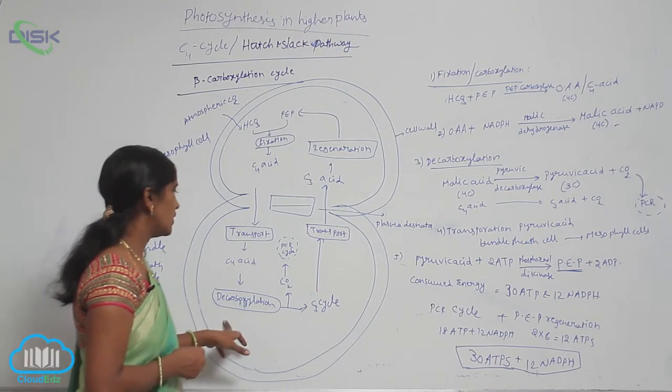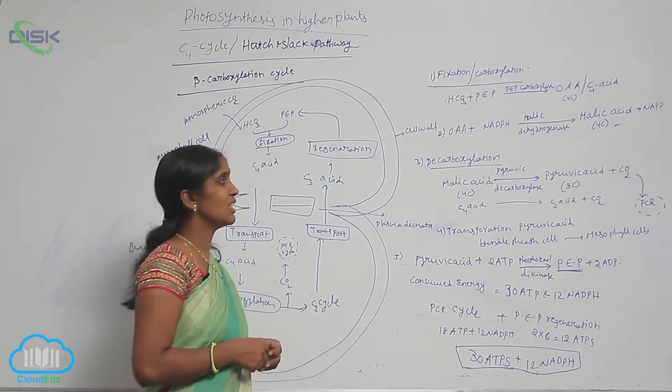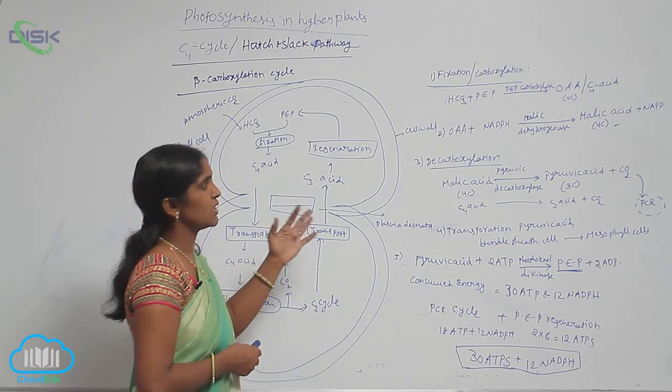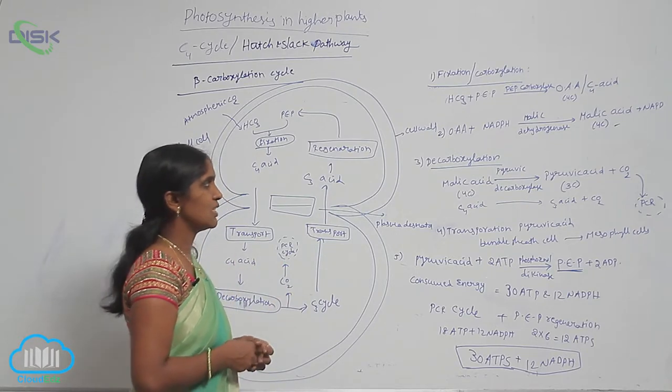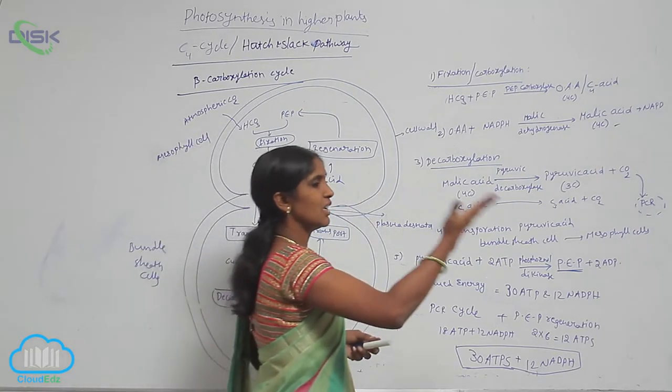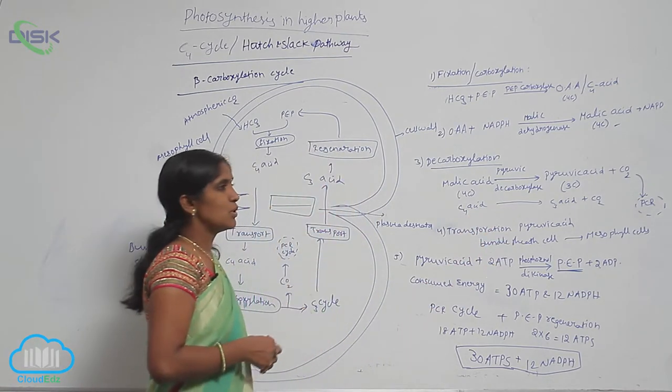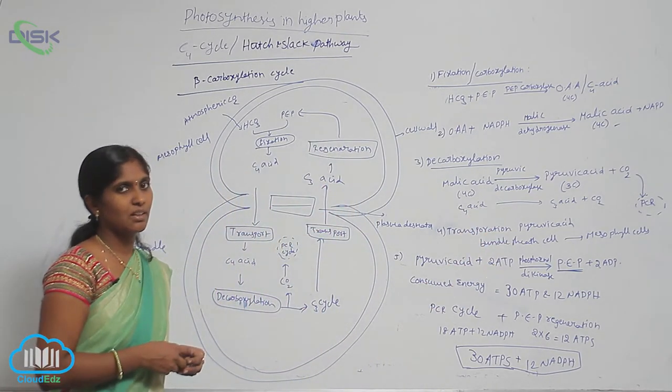Due to the decarboxylation reaction, C3 acids are produced, meaning C4 acids are converted into C3 acids. The C3 acid is then transported into the mesophyll cells to regenerate the PEP.